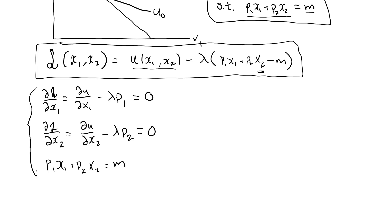here are three equations and three unknowns, x1, x2, and lambda. p1, p2, and m are just constants.